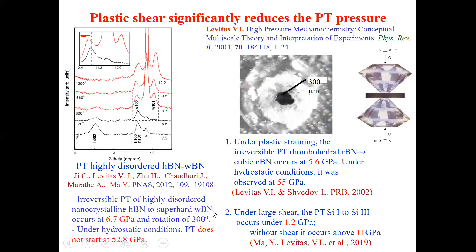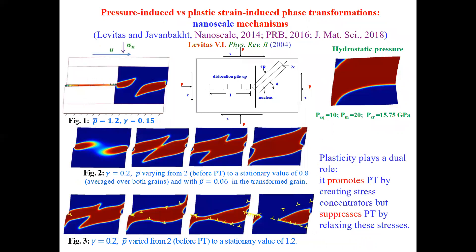For example, phase transition from hexagonal to superhard wurtzitic boron nitride: under hydrostatic conditions, no phase transition even at 53 GPa; under light shear, it's 6.7 GPa — an order of magnitude difference. Rhombohedral boron nitride to cubic superhard boron nitride: 55 versus 5.6 GPa. For silicon: this is a huge phenomenon. Classical thermodynamics, even with stress and strain tensors, does not describe this. More than 10 years ago, I made the hypothesis that this reduction in phase transition pressure is explained by formation of dislocation pileups during plastic deformation, which produce strong stress concentrators — and that is how new nuclei appear.